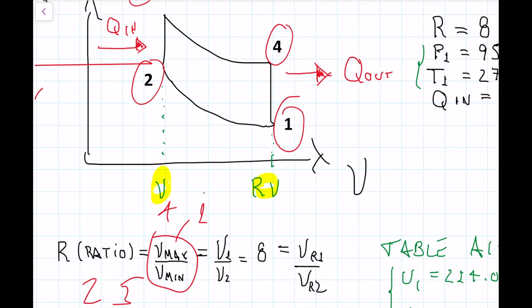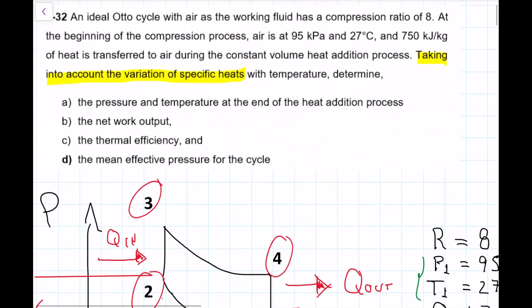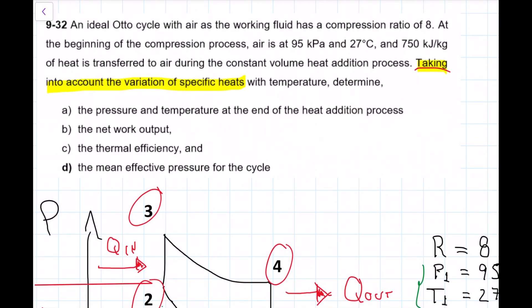Taking, check out this hash part here, taking into account the variation of specific heat. Right? We know that Cp and Cv, they're both functions of temperature. So if we need to take into account their variations, that means we can't just use an average Cp or Cv. So that means we can't use the Cp, Cv approach and we have to use the table information to be able to solve this.